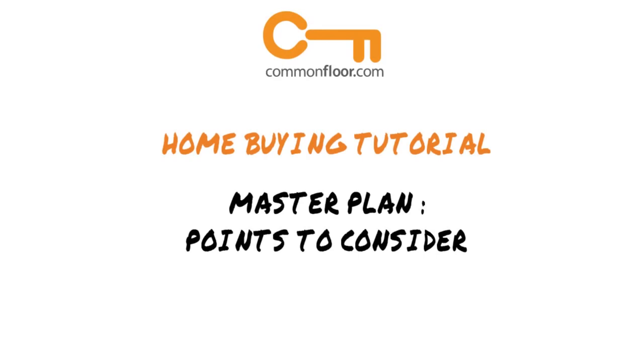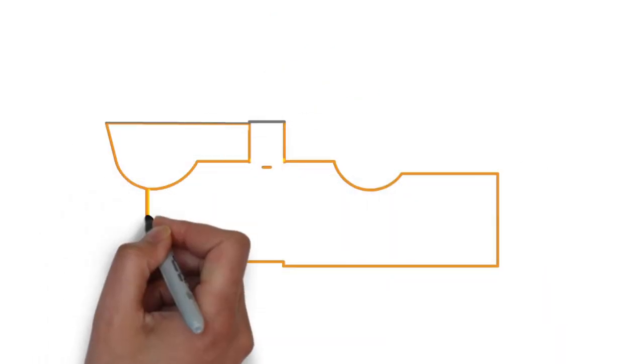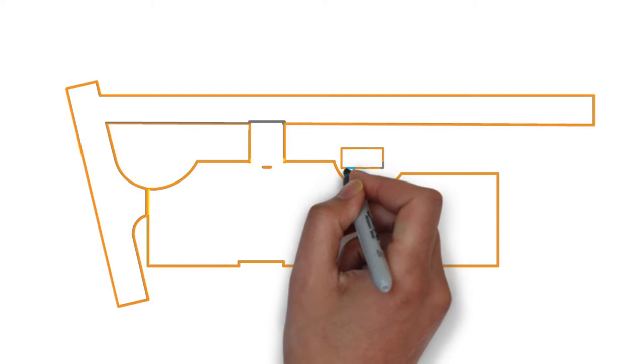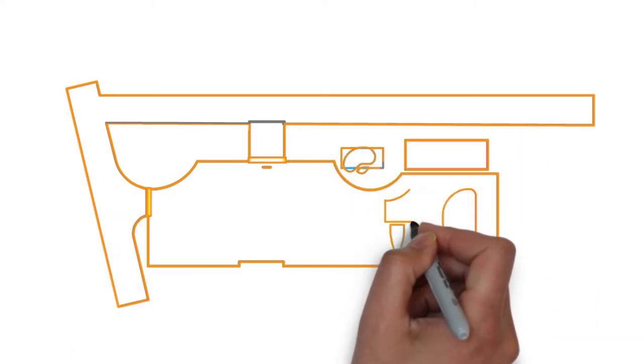A master plan is a small-scale graphic outline that shows all the major elements of a project. Also called a site plan, this document contains detailed drawings of a proposed project in a defined land area. You can get the master plan from your builder or project website.